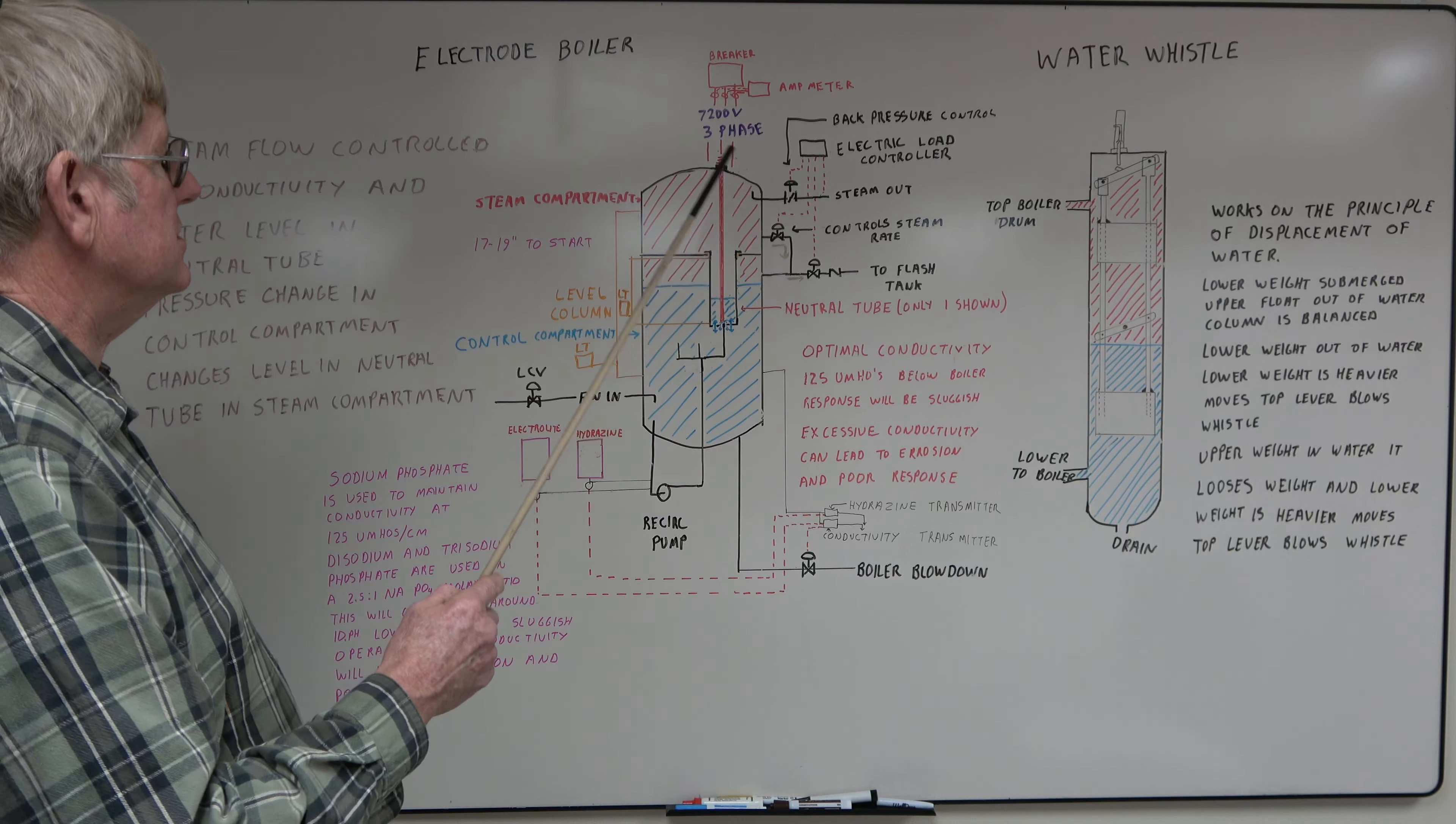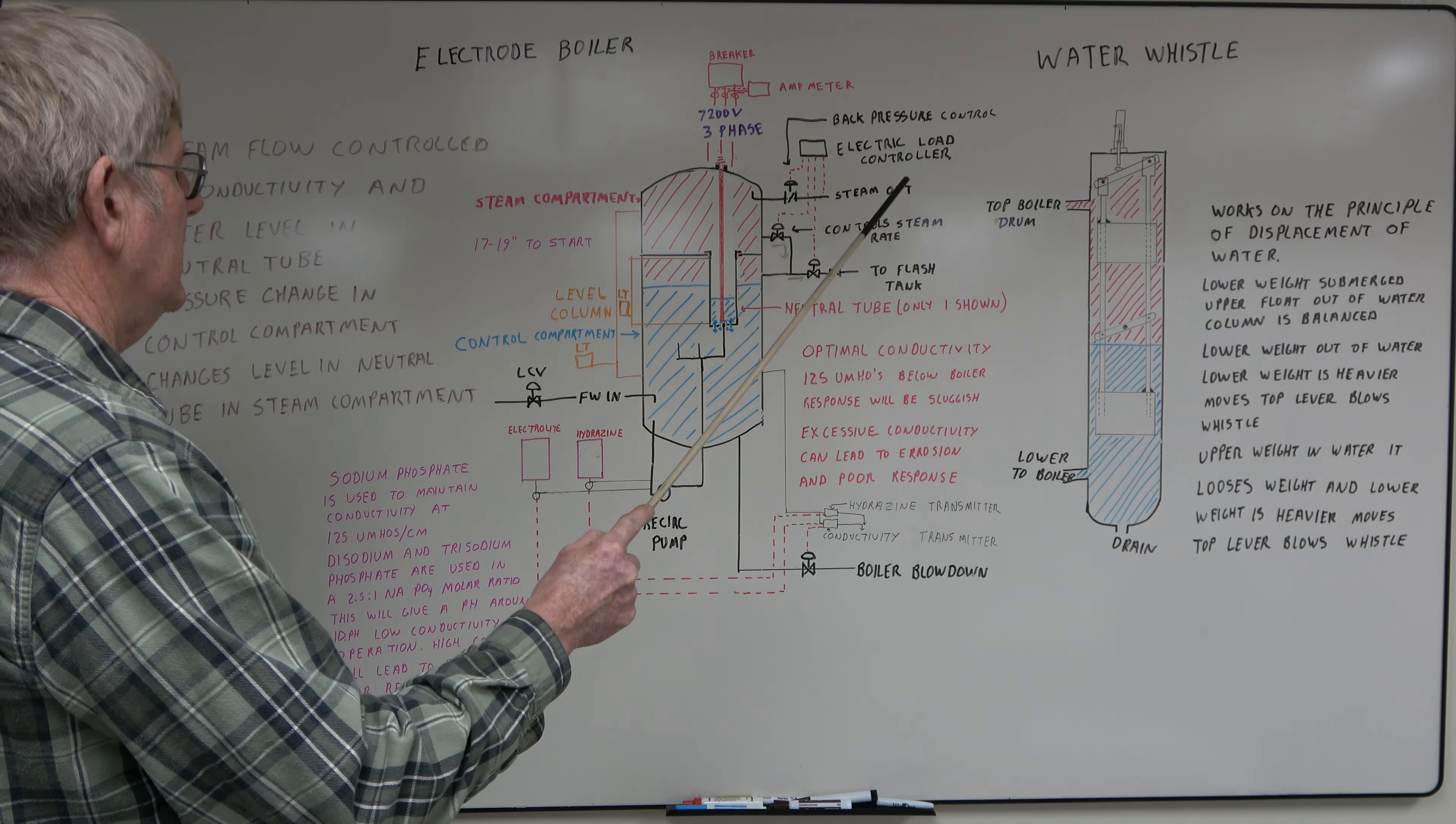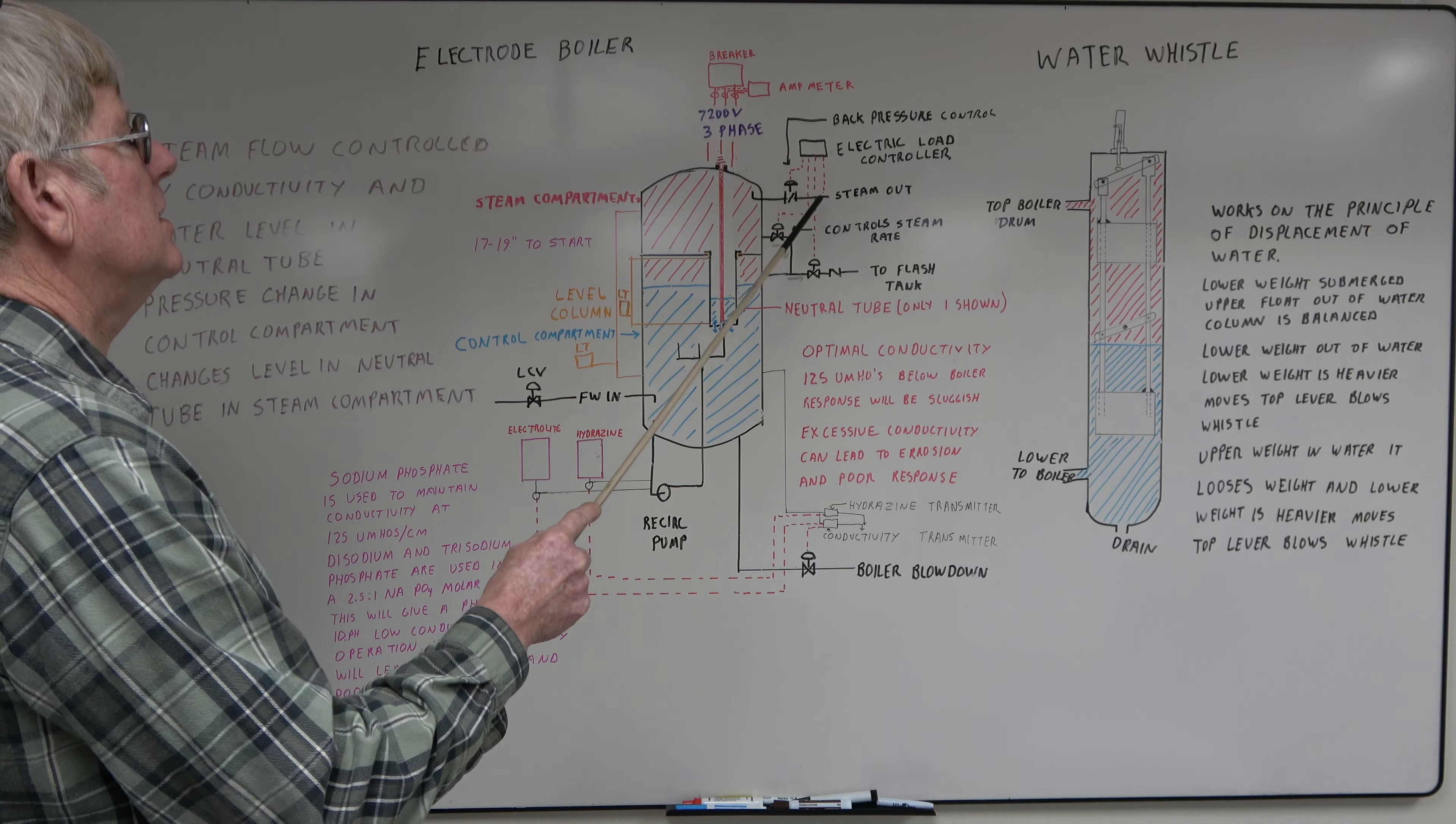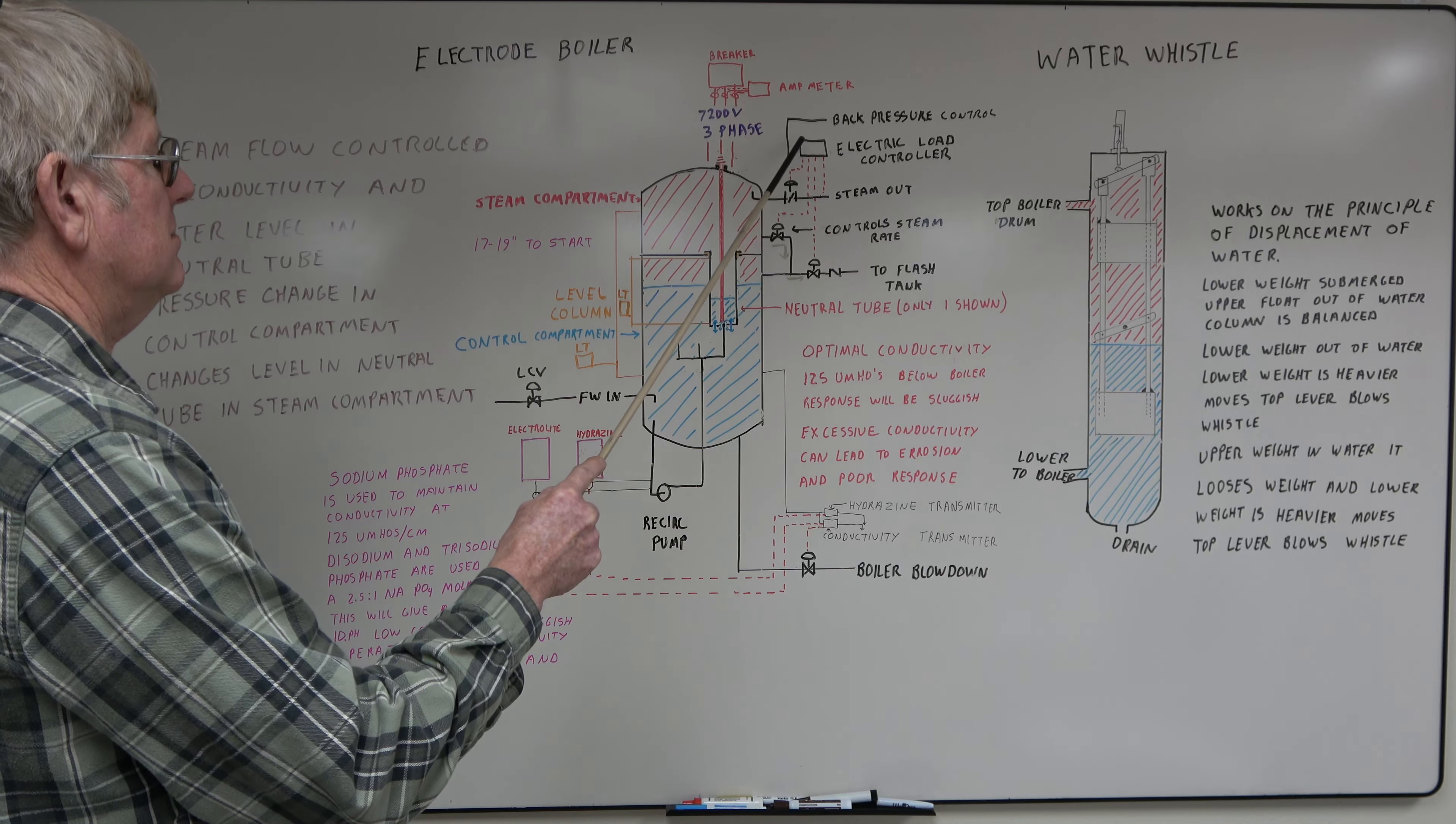The way the control system works, you have a back pressure control valve on your steam out. If you have real high steam load and the pressure drops, it causes problems. You're trying to maintain a constant pressure in here. The electric load controller, it looks at the steam out, balances that to the set point.